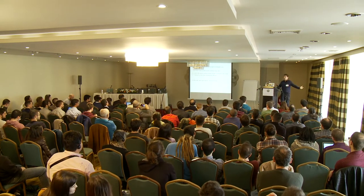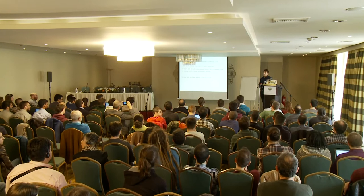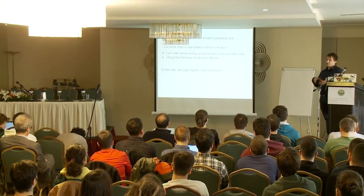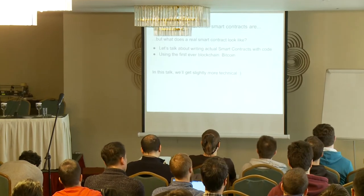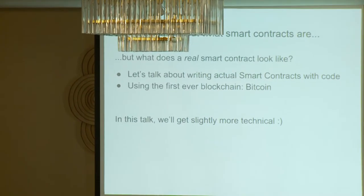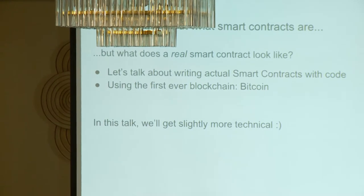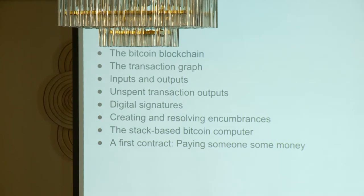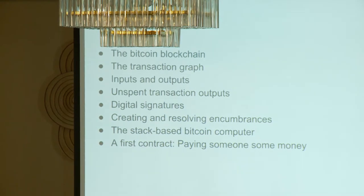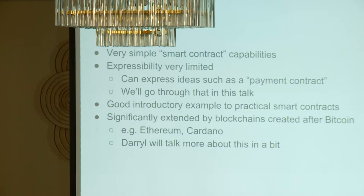The previous speakers talked a lot about what smart contracts are in general and gave you a general idea about what you can do. They talked about the decentralized computer that is the blockchain, and they talked about verifiers on that. So what does a smart contract actually look like? What I'm going to do in this talk is show you the simplest possible smart contract, which is going to be on Bitcoin.